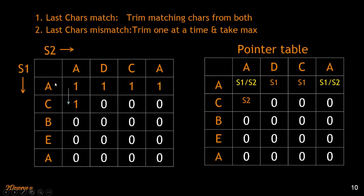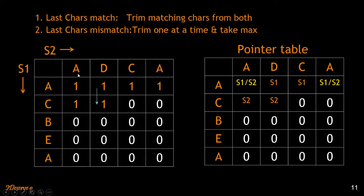The strings in consideration are AC and AD — C and D do not match. We leave out D: LCS of AC and A is 1. We leave out C: LCS of A and AD is 1. Both are the same, so it doesn't matter which we pick. Moving to the next column: C and C match. We trim both C's — what remains is LCS of A and AD, plus 1. LCS of A and AD is 1, so we increment by 1 and get 2.